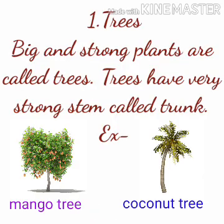Number 1: Trees. Big and strong plants are called trees. Trees have a very strong stem called a trunk. For example, mango tree and coconut tree.